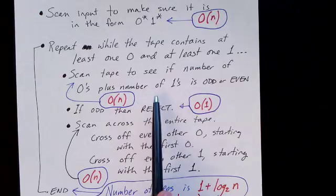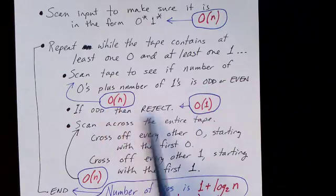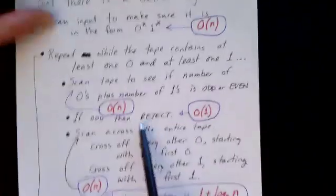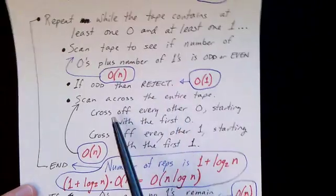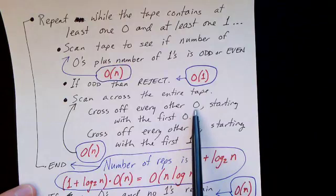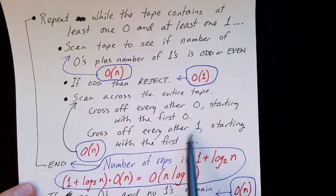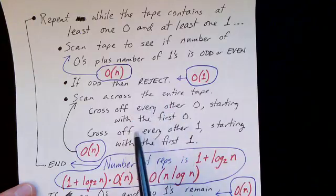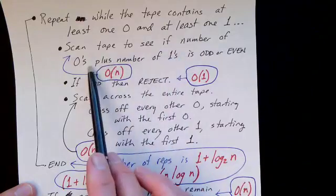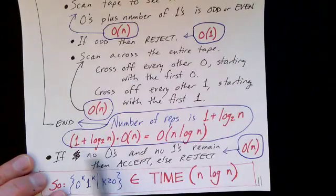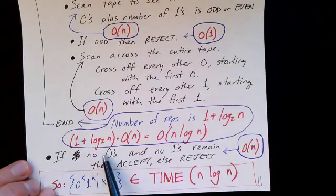If there is one extra one or one extra zero, the total length would be odd — so if it is odd, we reject right there, since we must have the same number of zeros as ones and the length must be even. Then we scan across the entire tape and cross off every other zero — changing half of our zeros to X's starting with the first zero. Then we cross off every other one, changing half of our ones to X's starting with the first one. On the next scan to check odd/even, we ignore the X's. Finally, we scan the entire tape to make sure no zeros and no ones remain; if so, we accept, otherwise we reject.